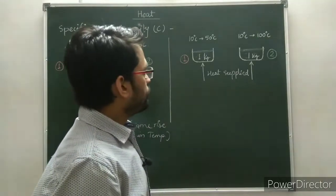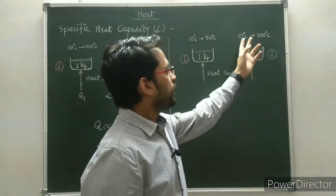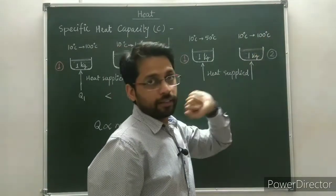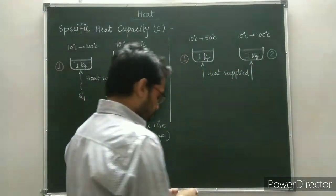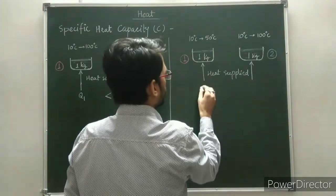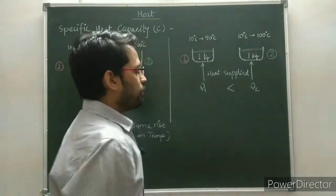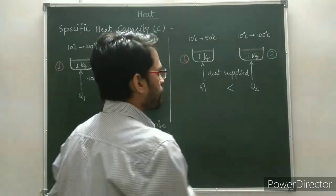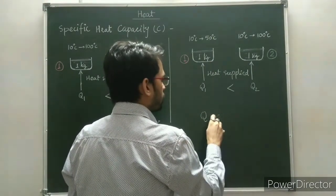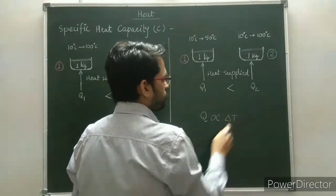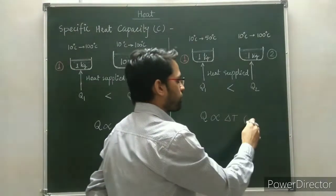Which container will require more heat? Obviously the second one, because we have to raise the temperature from 10 to 100, so the rise in temperature is more for the second container than the first. If heat supplied to the first container is Q1 and to the second is Q2, then Q2 must be greater than Q1. We can conclude that heat supplied is also proportional to the change in temperature — greater the change in temperature, greater must be the heat supplied for the same mass.